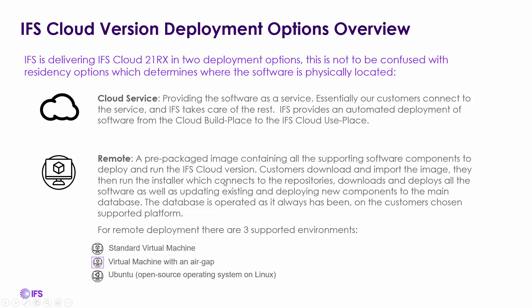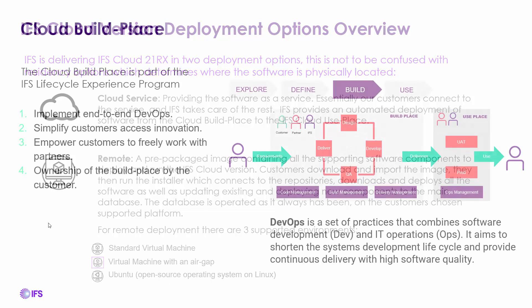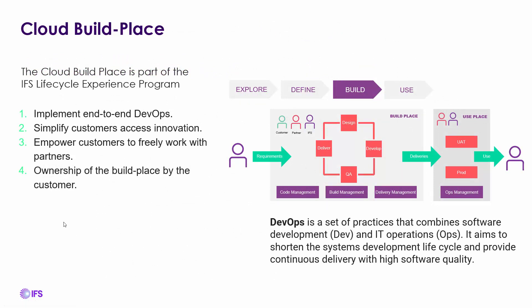With remote deployment, you decide how to support it in your environment using a standard virtual machine. If you have a requirement to be air-gapped from the internet — for companies controlled by Homeland Security and others — that's supported. Ubuntu, an open-source Linux operating system, is another option IFS provides for deployment. The build place implements end-to-end DevOps, combining software development and IT operations to shorten the time to deploy new releases, updates, patches, and continue configuring software, generating reports, integrations, and modifications.